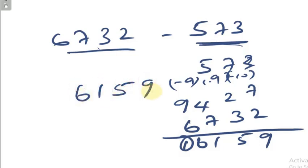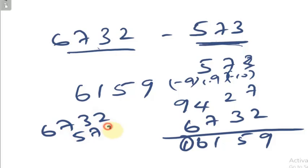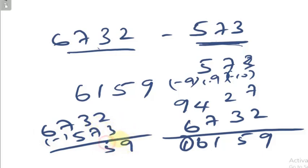You can verify: 6732 minus 573. 12 minus 3 is 9, 12 minus 7 is 5, 6 minus 5 is 1. Answer: 6159. Same answer.